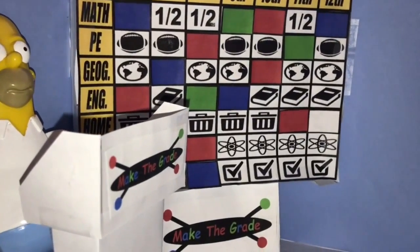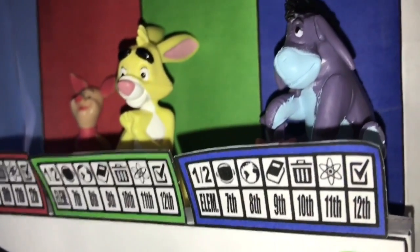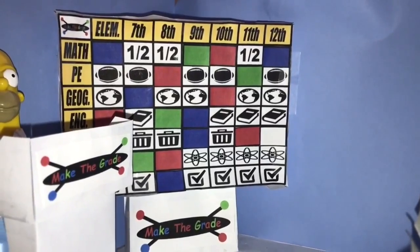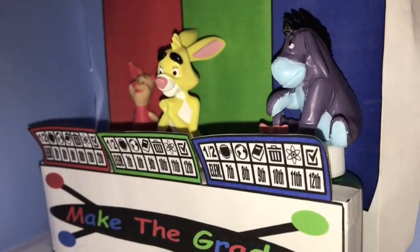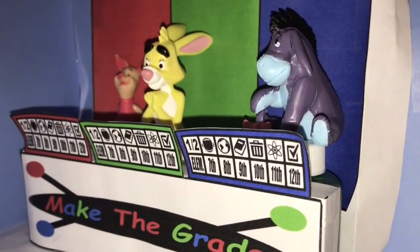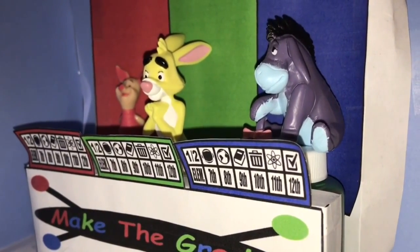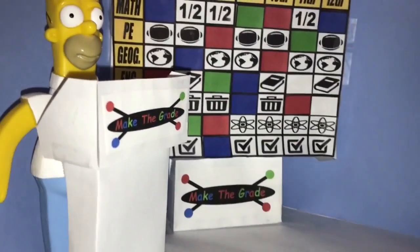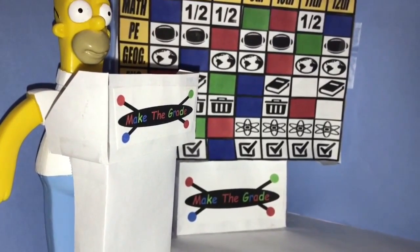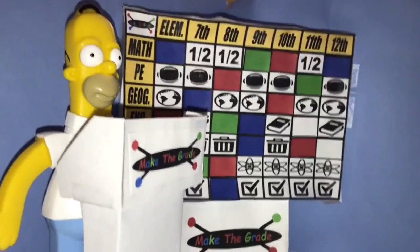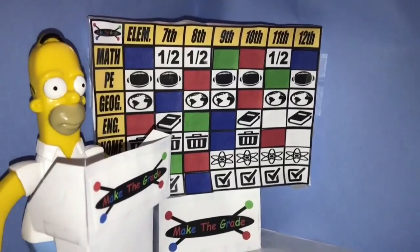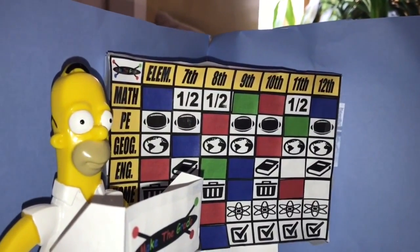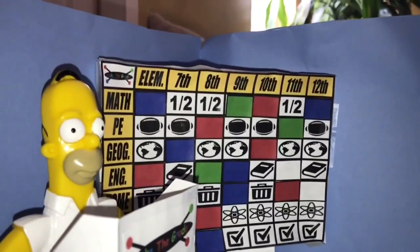Home Ec 9th Grade. Name two colors in the Pepsi logo. Eeyore. Red and blue. Yes. English for 11th. Many modern poems don't have a regular meter or rhyme scheme are written in what? Free verse. Free verse. Okay Eeyore, you're in control. Let's see. Science for seventh grade. We can't do that because that's already been used. Pick one.